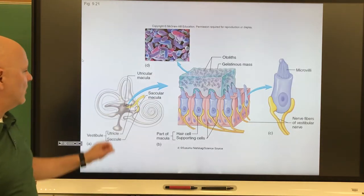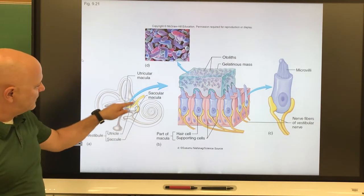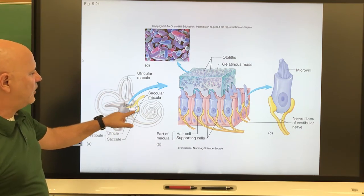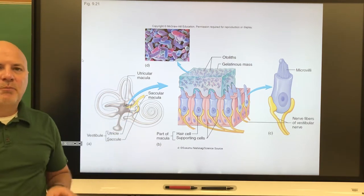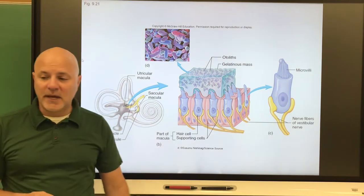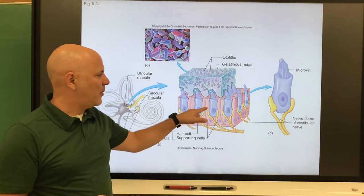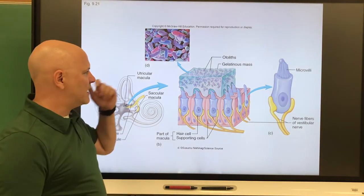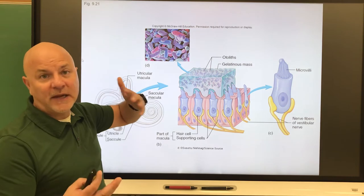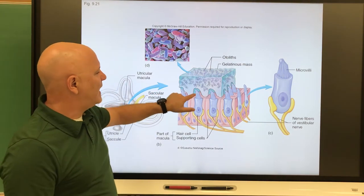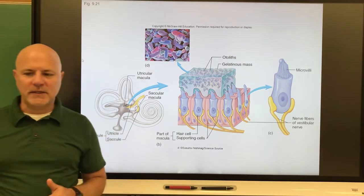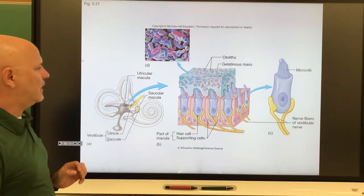Within the vestibule are two chambers: the utricle, which projects horizontally, and the saccule, which projects vertically. Both of these contain a structure called a macula — macula just means spot. A macula is a group of hair cells and supporting cells. Above those hair cells is a gelatinous material, like thick jello, and within that gelatinous material are small bone chips called otoliths, which add weight.